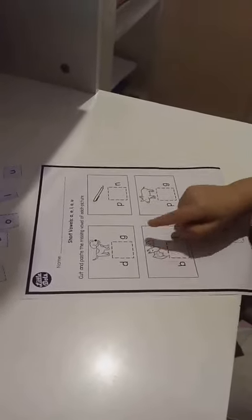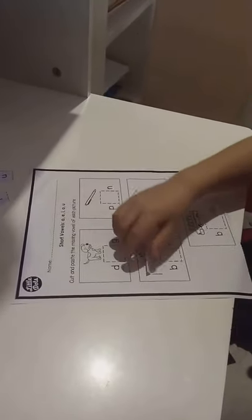What is the first picture? This one. Dog. What is the missing vowel? Short O.